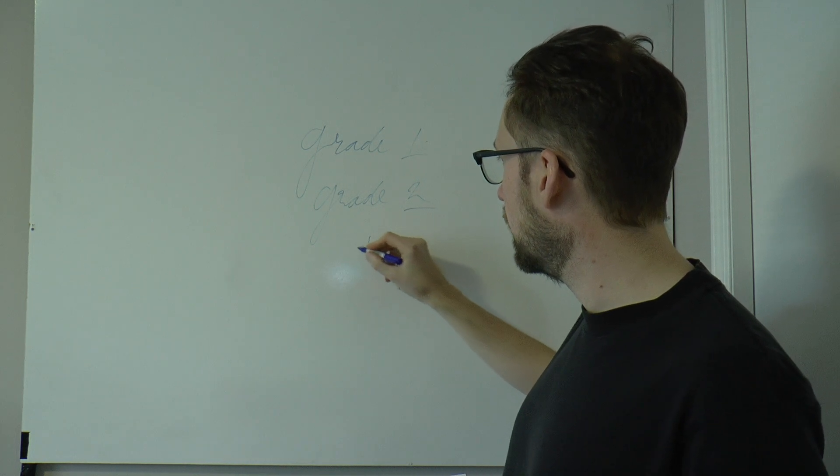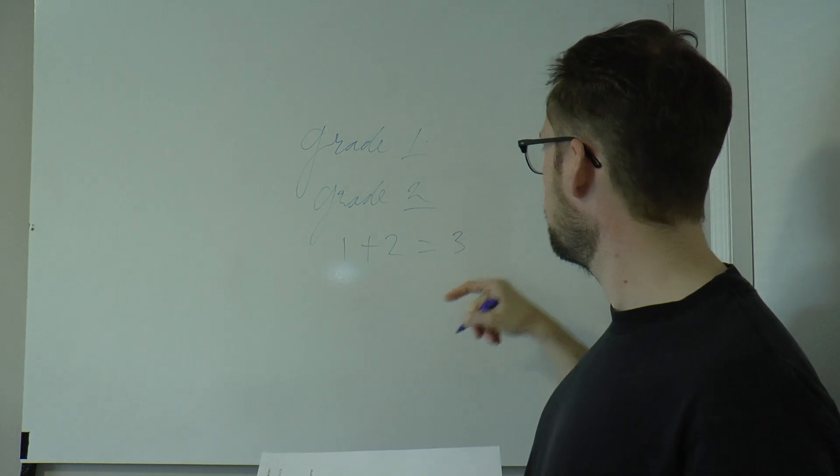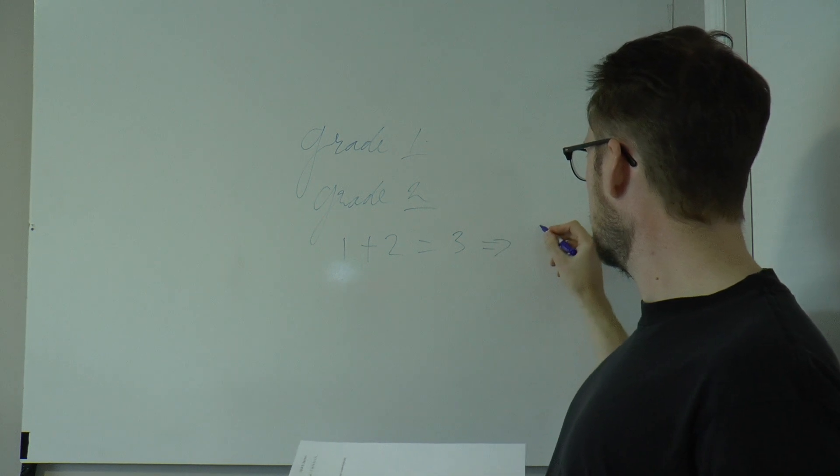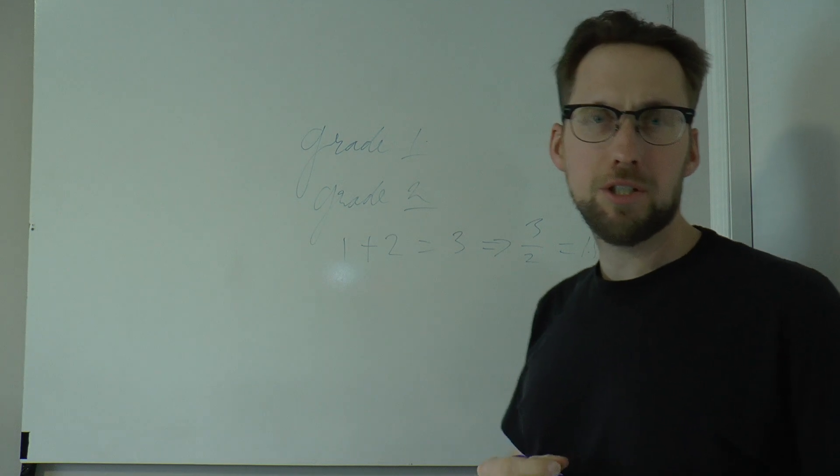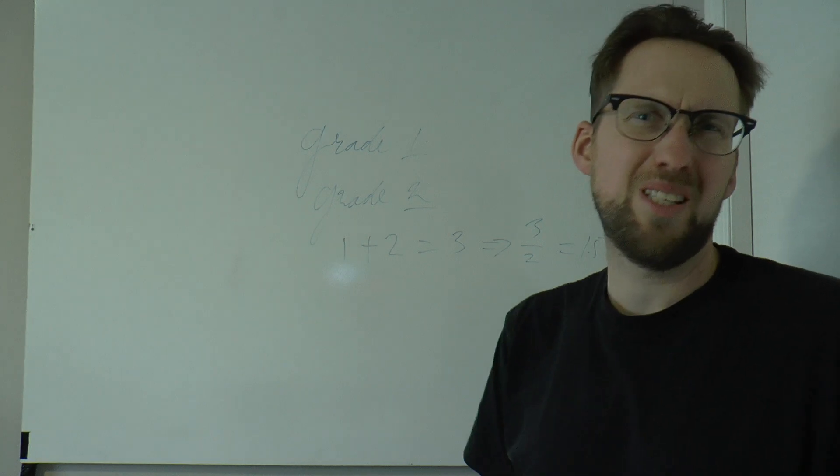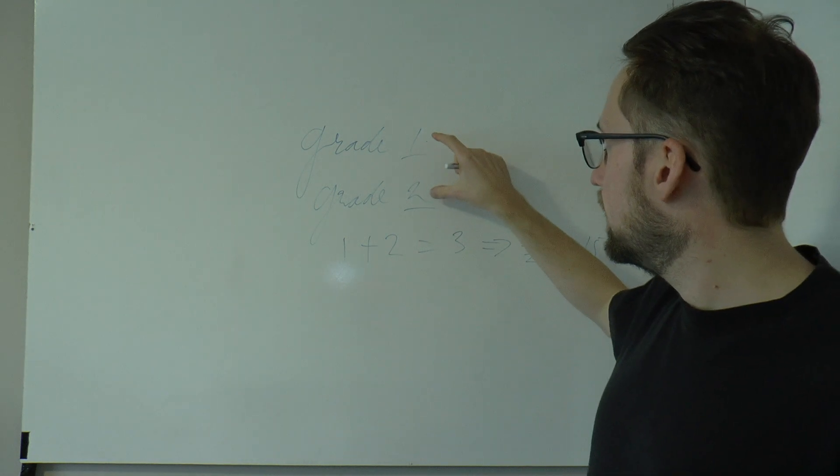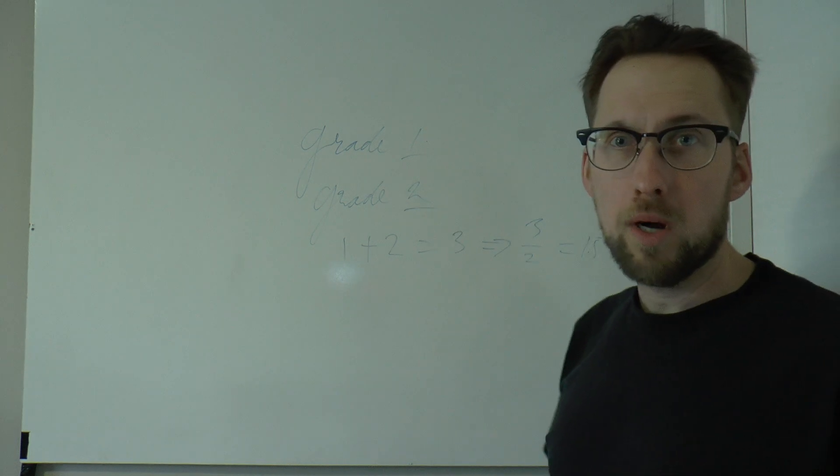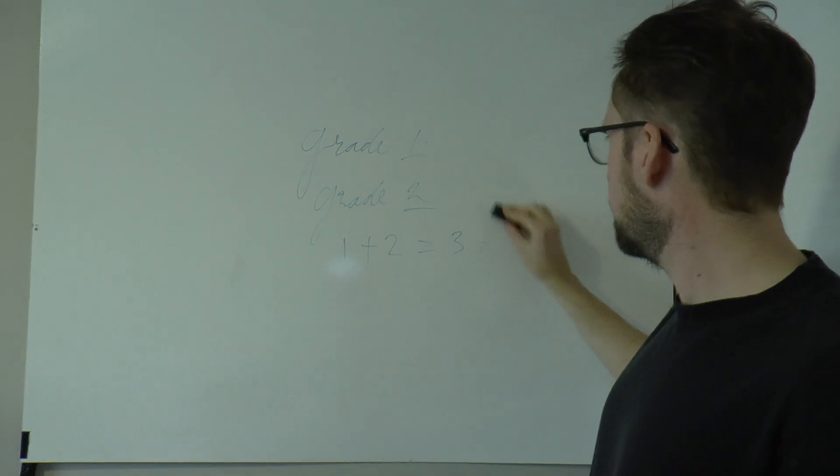However, you can still not say, okay, well, one plus two, that equals three, and I divide three by two. Now I have, on average, a child in grade one and a half. This is not possible, right? That makes no sense. So although this data is ordinal, I can order it, I can say two is more advanced than one, I can still not really do any math on it, and that's pretty much it.